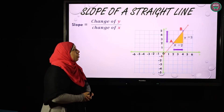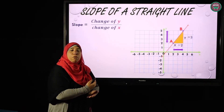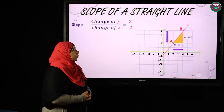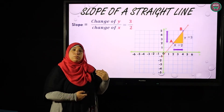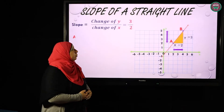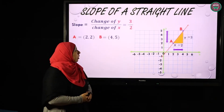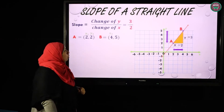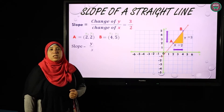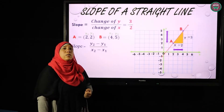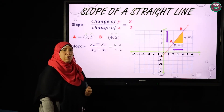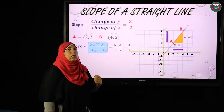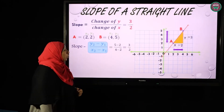The point A was at (2, 2) and moved to B at (4, 5). So the change of Y: it was 2, became 5, so it's 3. The change of X: it was 2, became 4, so it's 2. So I can say that the slope here is 3 over 2. The rule for calculating the slope using two points passing through the straight line is: slope = (y2 − y1) / (x2 − x1) = (5 − 2) / (4 − 2) = 3/2.